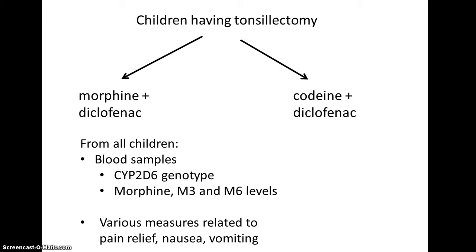Children scheduled for a tonsillectomy at a London hospital were randomly assigned to one of two groups. Children received either morphine and diclofenac or codeine and diclofenac as pain medicine after the procedure. Blood samples were obtained from all children — one to determine the CYP2D6 genotype, including alleles coding for defective or non-functioning proteins versus functional proteins. Additional samples examined levels of morphine, morphine 3-glucuronide, and morphine 6-glucuronide metabolites. Children were also observed for nausea, vomiting, pain relief, and sedation.